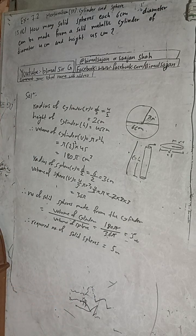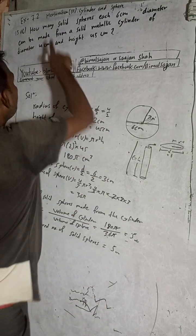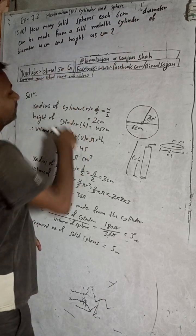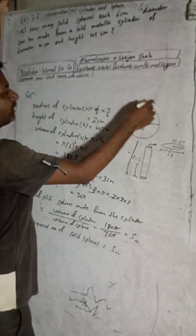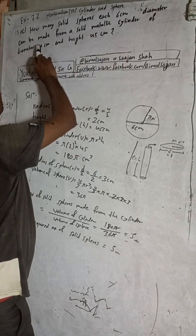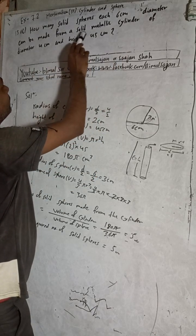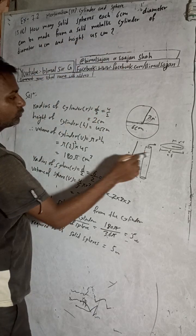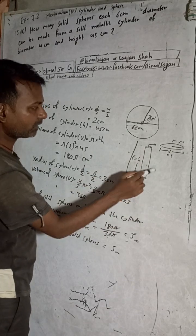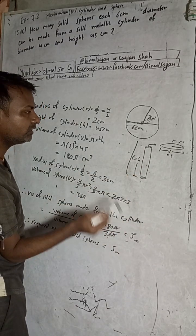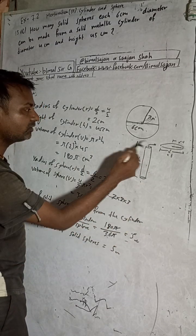Now I will explain in Nepali. How many solid spheres each of 6 cm diameter can be made from a solid metallic cylinder? The cylinder is made of metal.